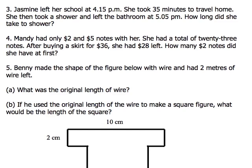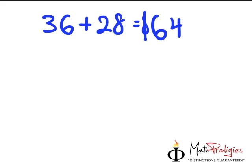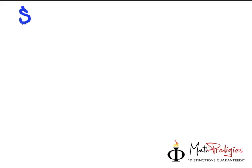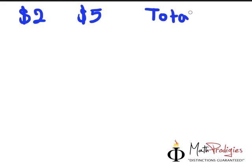So like I said, we have to do guess and check. Guess and check is basically something like this: we just have to guess what number we have. So this is how we do it — $2 notes, $5 notes, then you find out what is the total number of notes and the value.